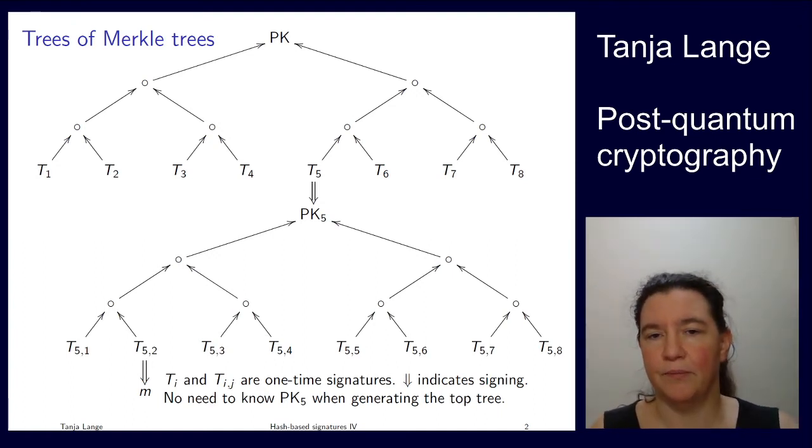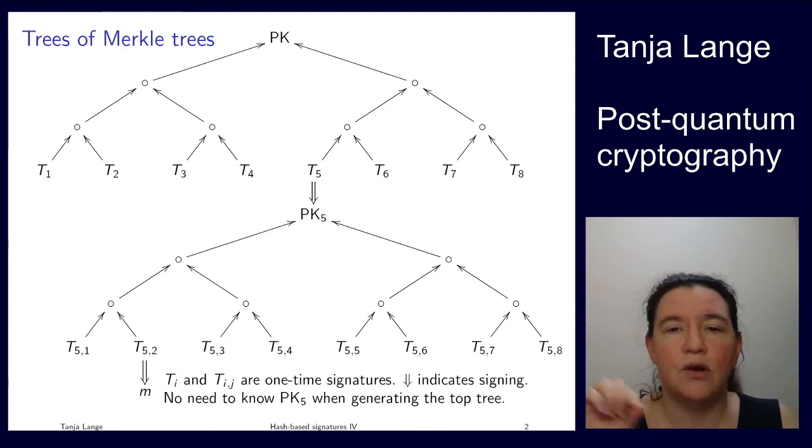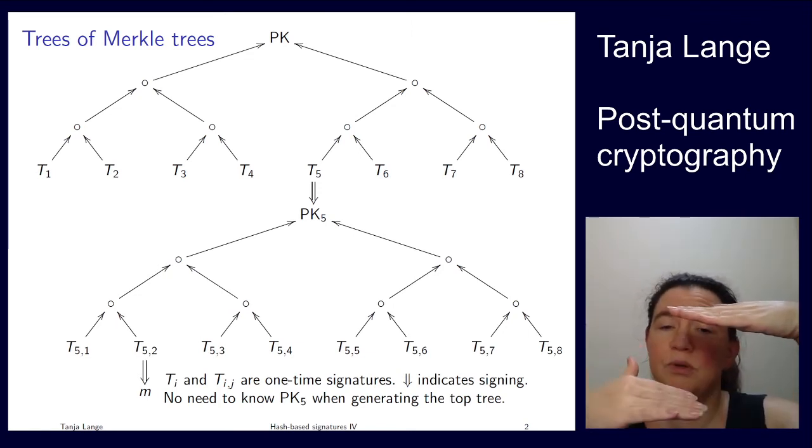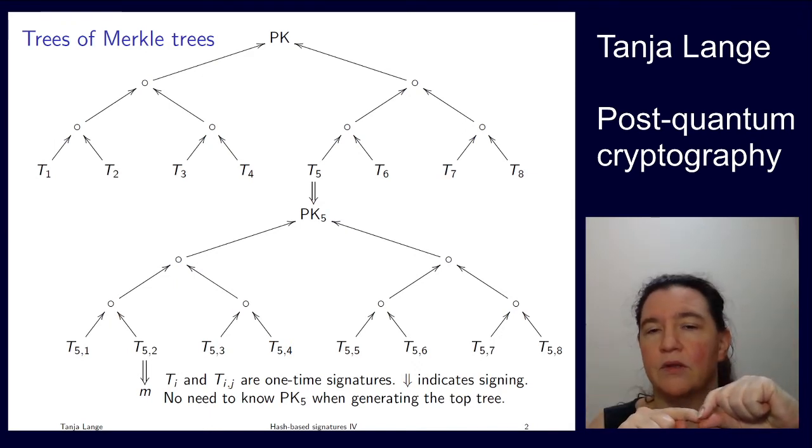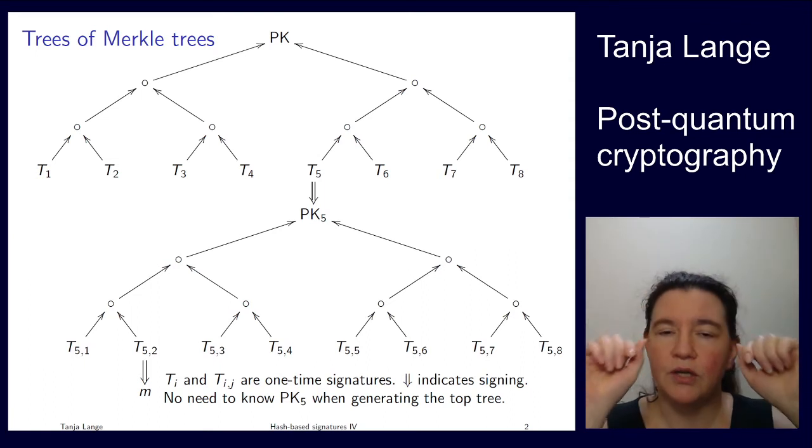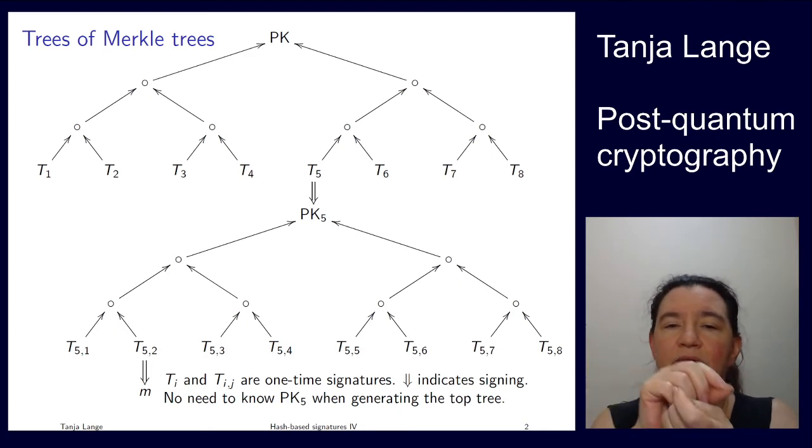And you don't need to know this public key, PK5, when you're generating the top tree. You can have this with multiple trees. You can have this asymmetrically. If, for instance, T1 is on a day where you don't have much time, you can make a small tree under there. If T5 is on a day that you have lots of time or you're running out of signatures, you can make a bigger tree under it. The bigger the tree is under it, the longer the authentication path. And if you have multiple levels of your trees, then for each level you need to include also a signature. So for each tree part, you're having the siblings in the authentication path. So if there are three levels, you have three siblings. And then per tree, you have one one-time signature.